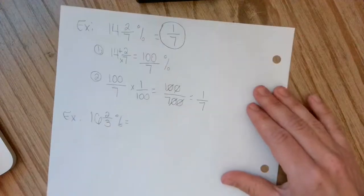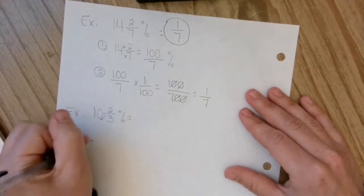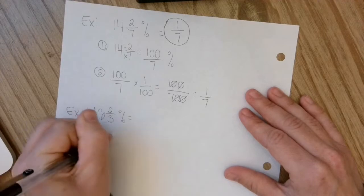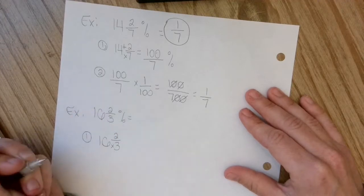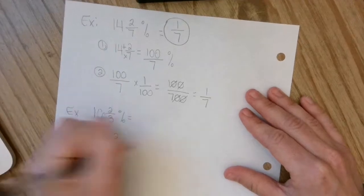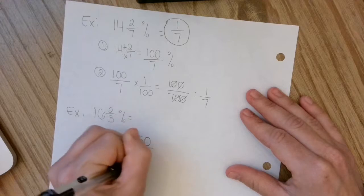Okay, the next question. I have 16 and 2 thirds percent. So my first step is going to be to change that into an improper fraction. So 16 times 3 plus 2 gives me 50 over 3.